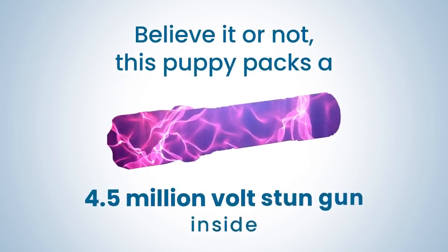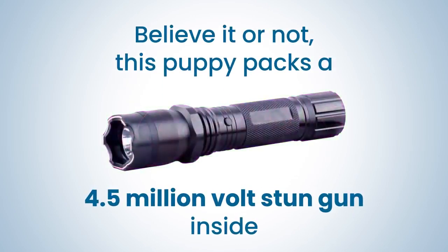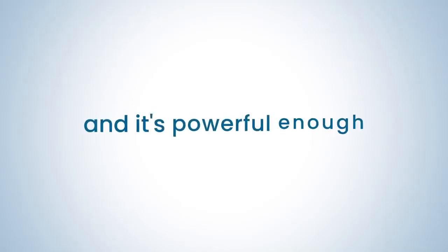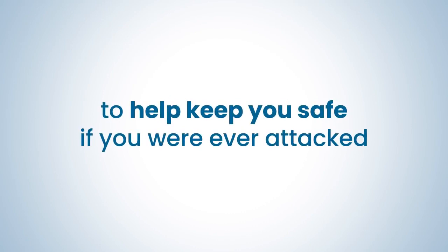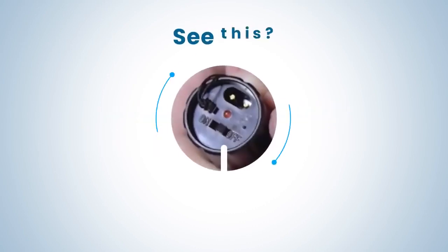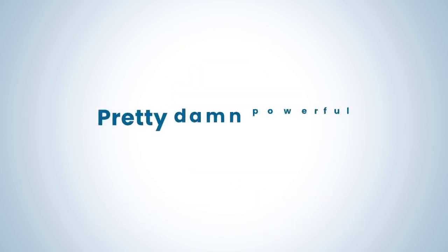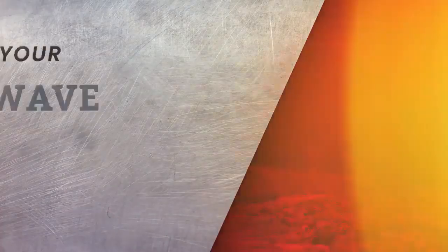Believe it or not, this puppy packs a 4.5 million volt stun gun inside. That's powerful enough to stop a grown man's heart, and it's powerful enough to help keep you safe if you were ever attacked. See this? We put a safety on it because it's so powerful. Pretty damn powerful.